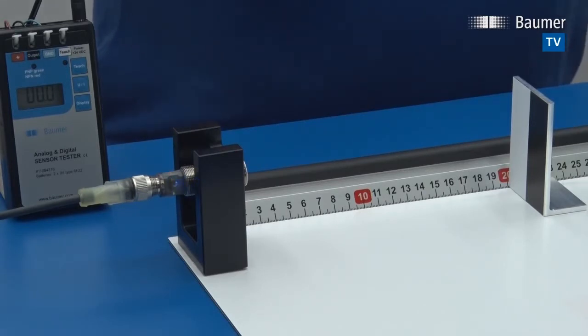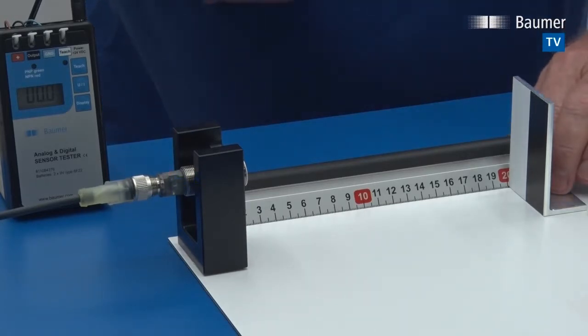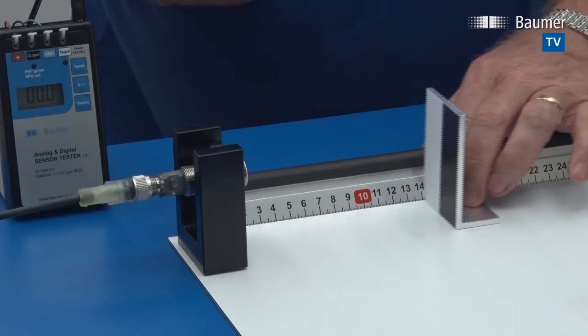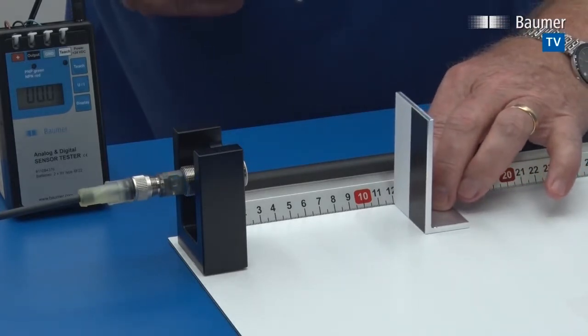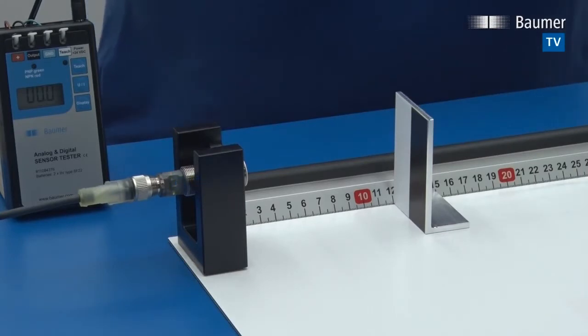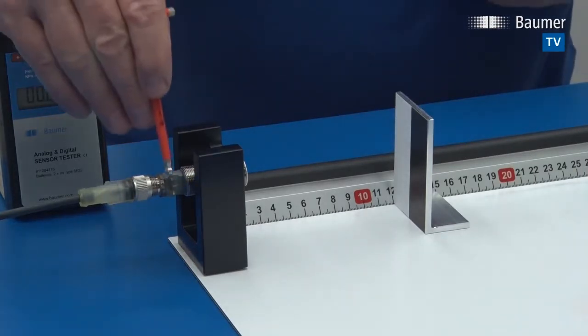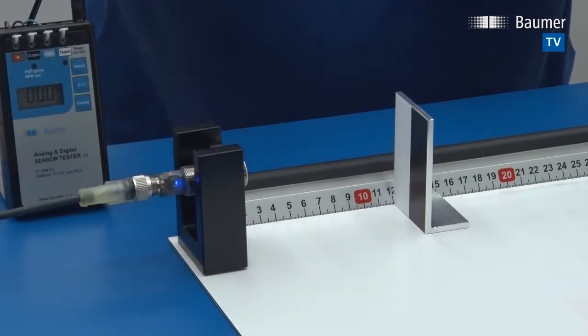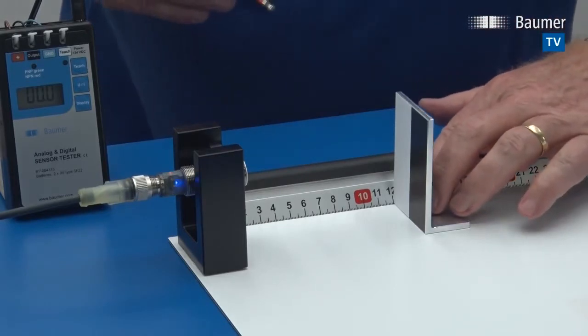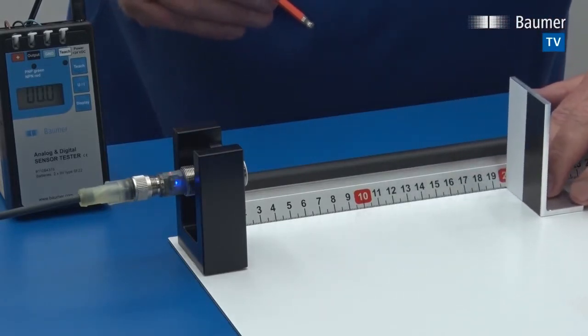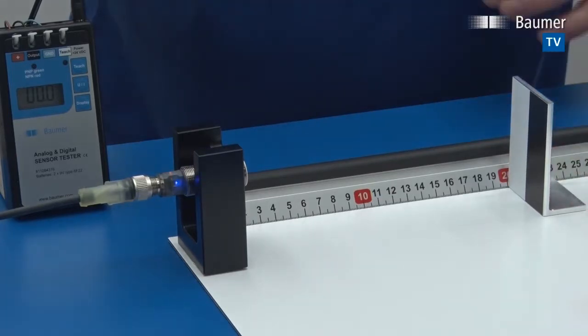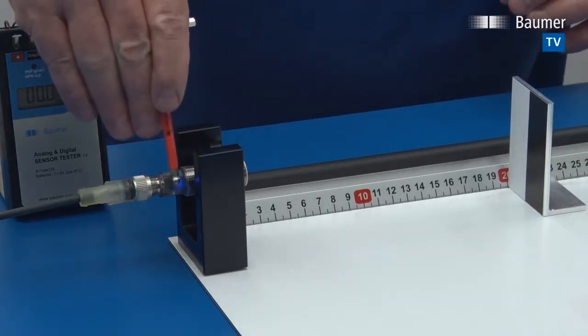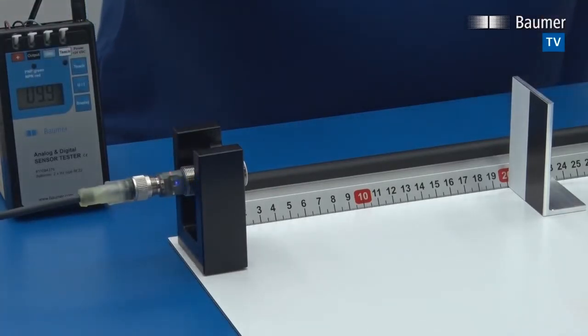We now want to teach the sensor to measure the distance against the object between 20 centimeters and 12 centimeters. We leave the target at 12 centimeters and confirm that distance by QTeach. The sensor is now requesting the second end of the measuring range. We go to 20 centimeters and confirm that again by QTeach.